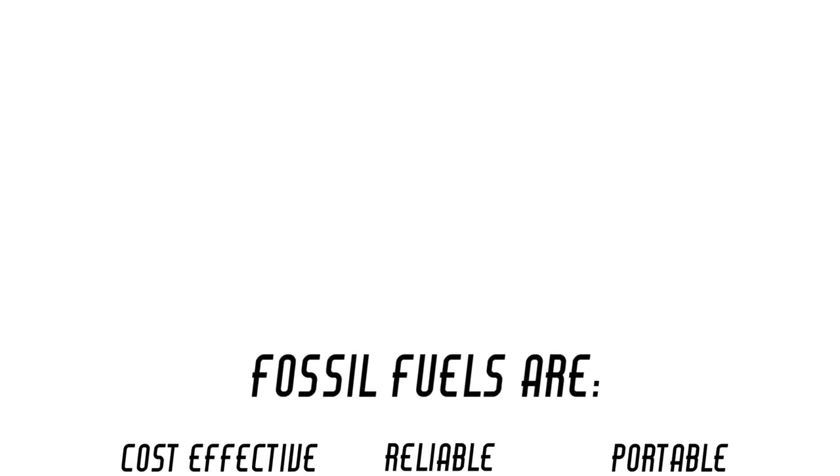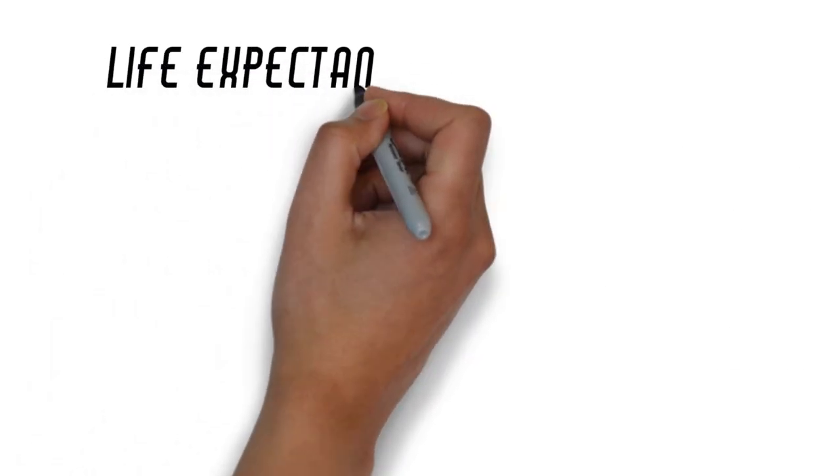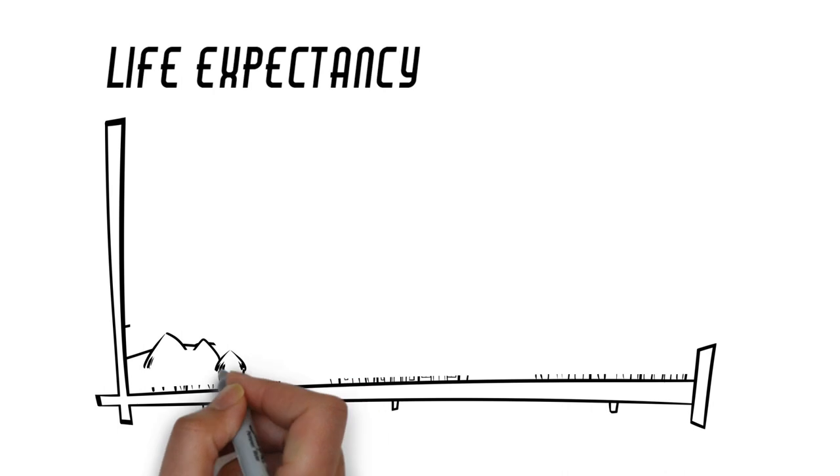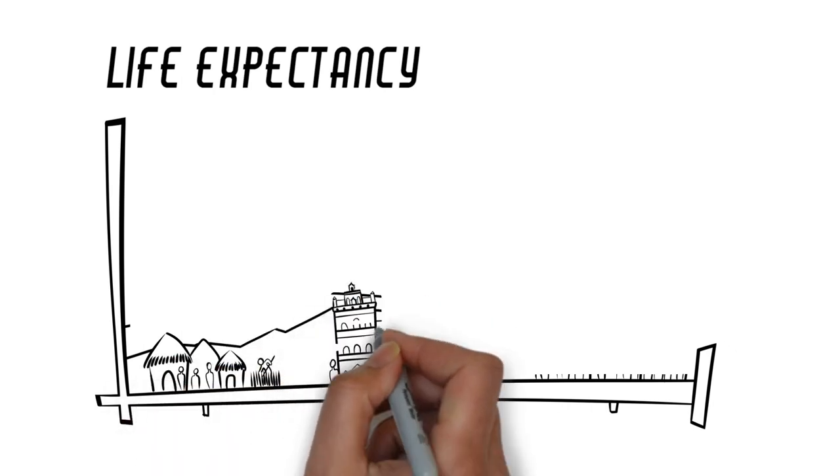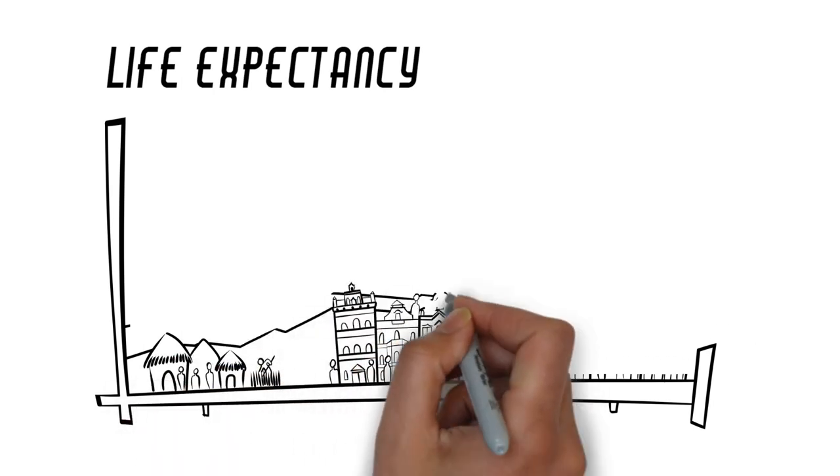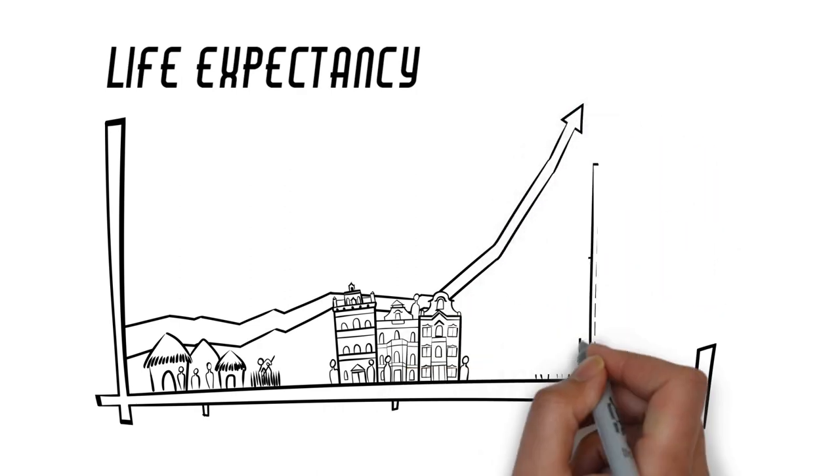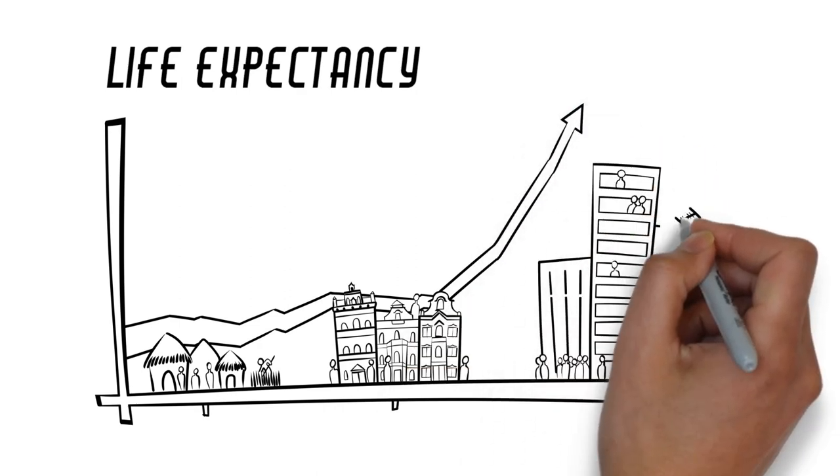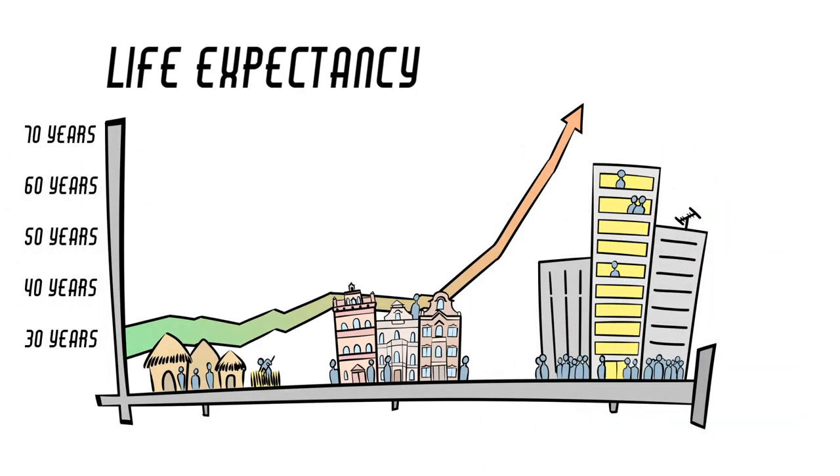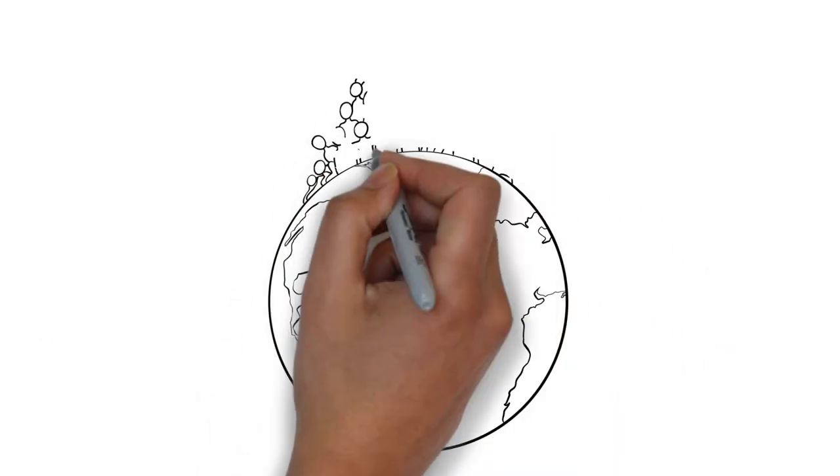For most of human history, the average life expectancy was around 30 years. Populations remained relatively stagnant for centuries. Then, fossil fuels sparked the industrial revolution, creating a boom for humankind and changing everything. Our planet now supports 8 billion people.